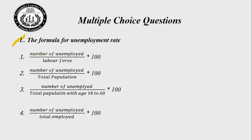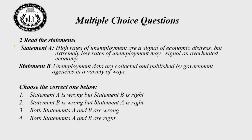The formula for unemployment rate: Choice 1 — number of unemployed divided by labor force multiplied by 100. Choice 2 — number of unemployed divided by total population multiplied by 100. Choice 3 — number of unemployed divided by total population aged 18 to 60 multiplied by 100. Choice 4 — number of unemployed divided by total employed multiplied by 100. The correct answer is Choice 1: number of unemployed divided by total labor force multiplied by 100.